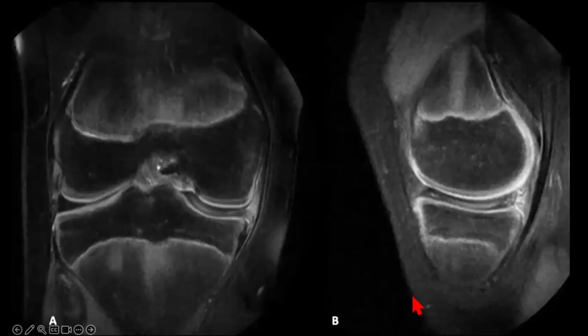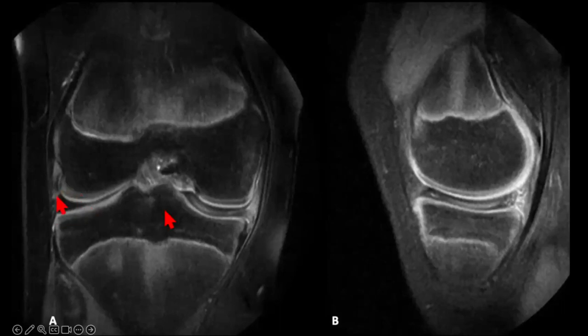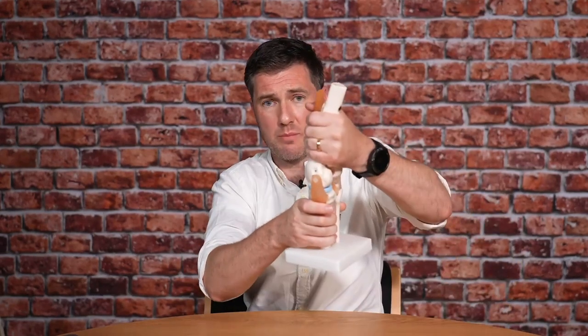Here's an example of a discoid meniscus on the lateral knee — roughly 3% of the population will have this. On MRI we usually see the characteristic bow-tie effect, and here you can see a much larger than normal meniscus. These are a common cause of mechanical knee pain, especially in adolescents starting to engage in more sports, because the larger meniscus is more prone to tearing — there's more tissue to grab and twist.